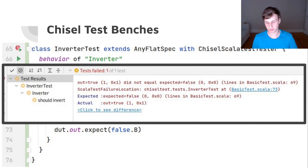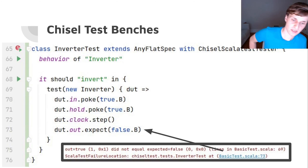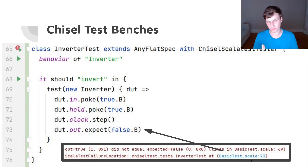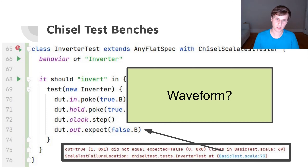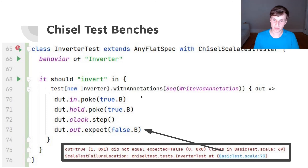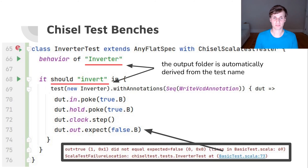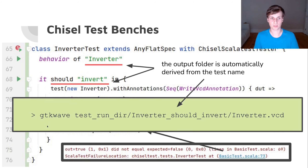So how do we debug this? Normally people first look at the source locator displayed in the failure — you can click on that in your IDE and jump to the line to think about what was going on. For more introspection into the circuit, we produce a waveform. To get a waveform in chiseltest we add a withAnnotations block and the writeVCD annotation to our test, and it will produce a VCD saved in a directory named after the test.